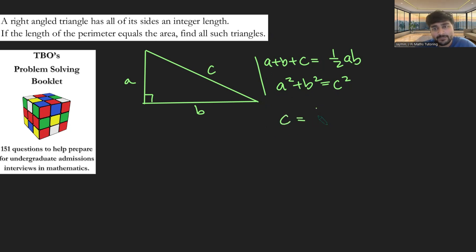So if I have C equals a half AB minus A plus B. And now if I square this, I get C squared equals a quarter A squared B squared minus two lots of this times this, which will be AB times A plus B, and then plus A plus B squared, which is A squared plus 2AB plus B squared.